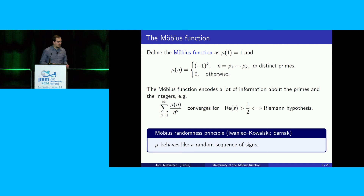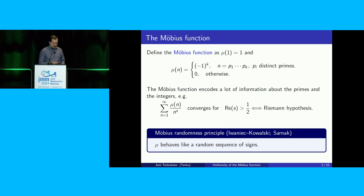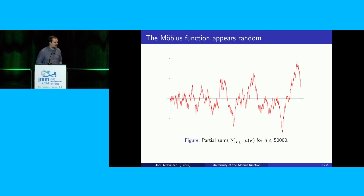Of course, that's a very general statement, which is not precise at this formulation. Later on in the talk, I'll give you precise interpretations of this conjecture, of which there are many. But let me first show you the following plot, which maybe gives empirical evidence for why you would expect the Möbius function to be random.